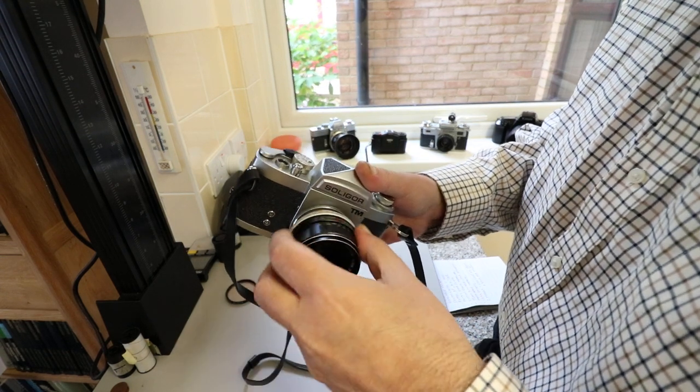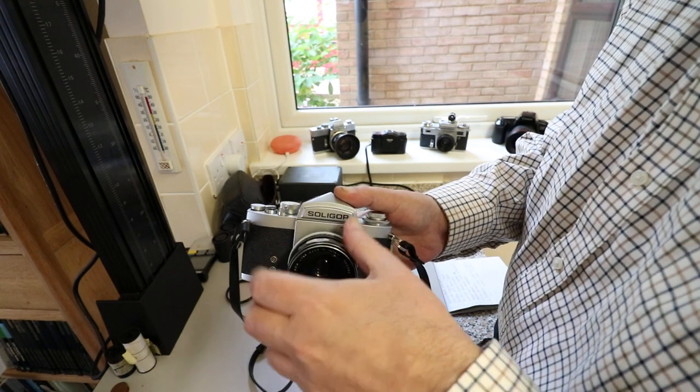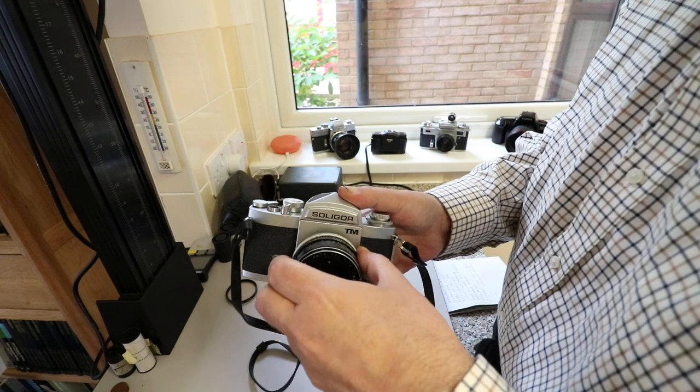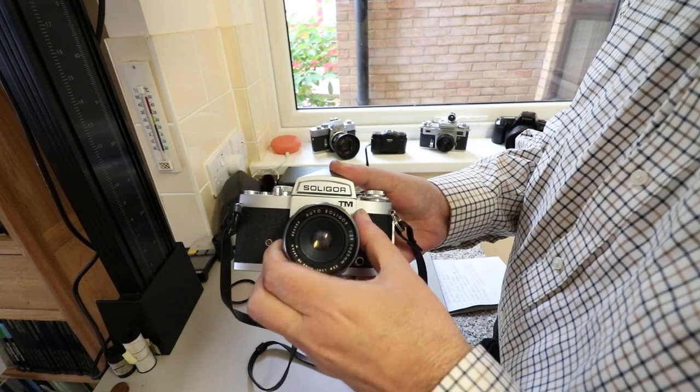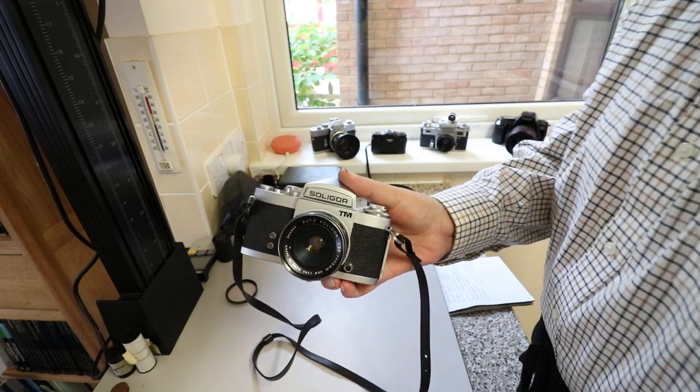Soligor really just rebranded. The camera was actually manufactured by Miranda until 1978, when Miranda stopped manufacturing cameras altogether because they couldn't compete with the likes of Nikon, Canon, and Olympus.